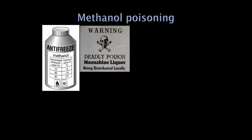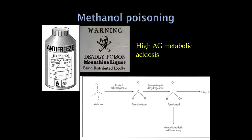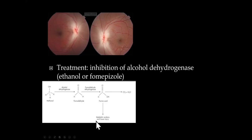Let's go through specific types of metabolic coma commonly asked on boards. Methanol poisoning occurs in people making moonshine. As methanol is converted to formaldehyde and formic acid, it is very harmful to the brain and optic nerve. The classic board finding is that patients are confused or in a coma with a high anion-gap metabolic acidosis. Optic nerve involvement is classic. Treatment is to inhibit alcohol dehydrogenase — you can give ethanol or fomepizole — to prevent breakdown into harmful byproducts.